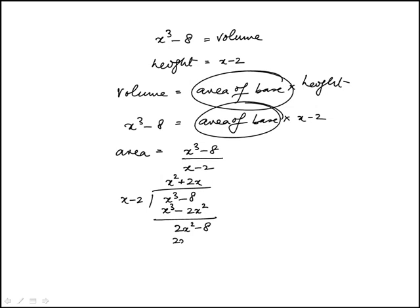Then I do plus 2x. So this would be 2x squared - essentially you're matching the first term - minus 4x. And this would be 4x minus 8.